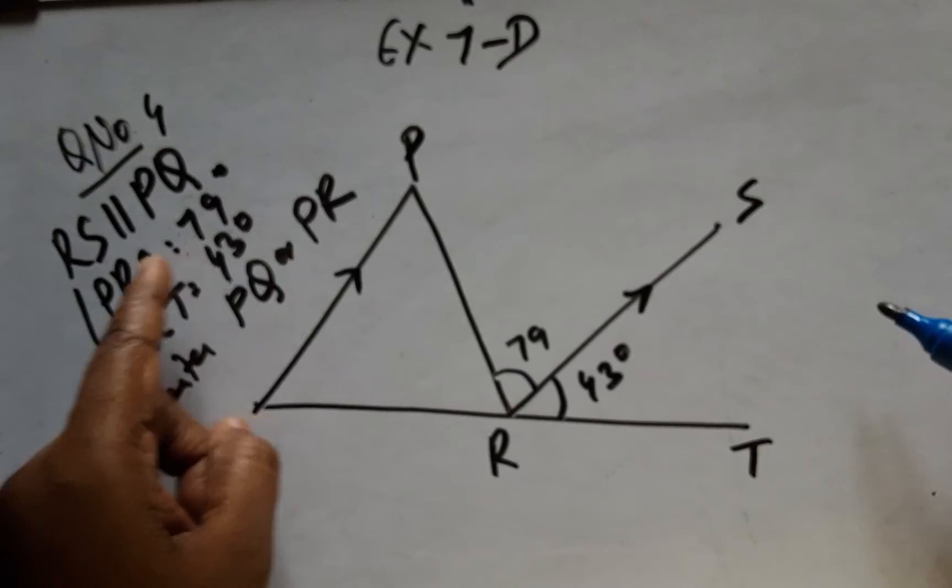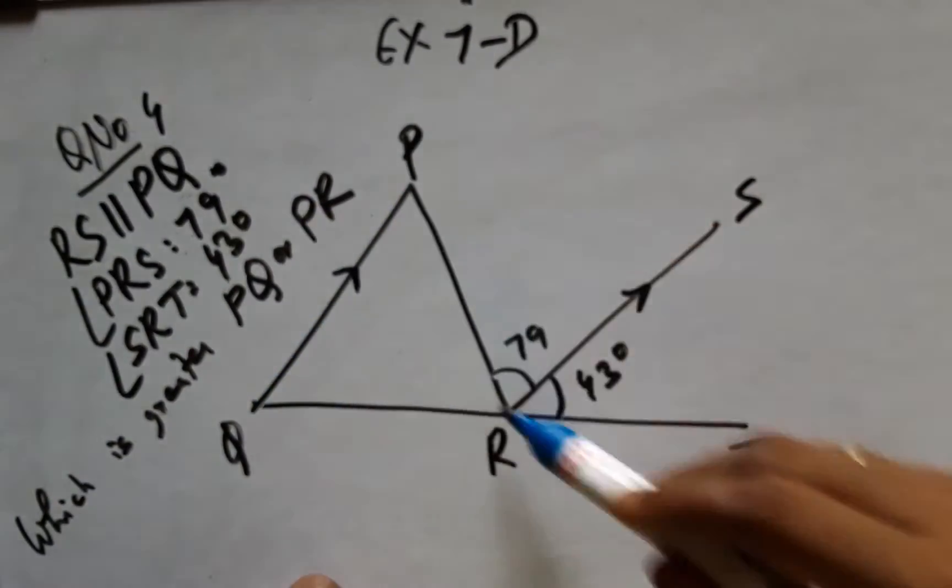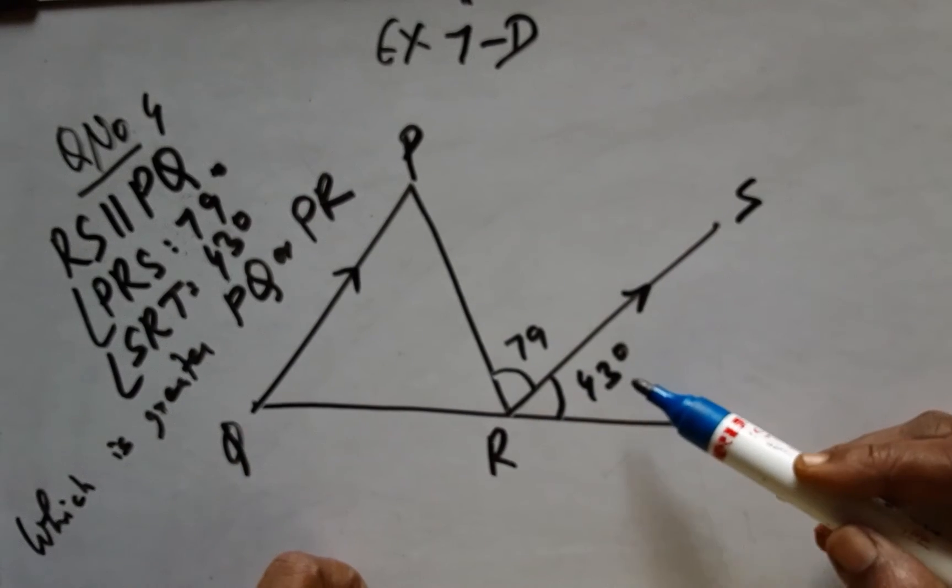The fourth question: RS is perpendicular to QP, and angle PRS has been given, and angle SRT is 43 degrees.